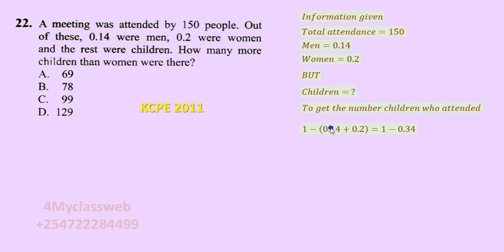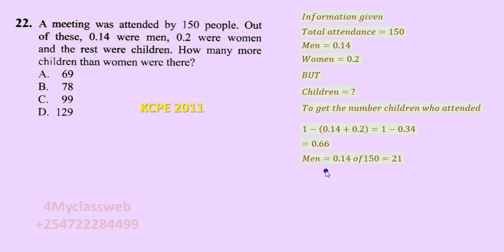Once you combine the fractions for men and women, you get 0.34. Subtracting from one gives you 0.66, so 0.66 is the fraction that represented the attendance for children.